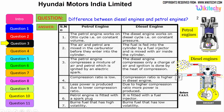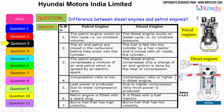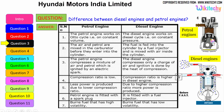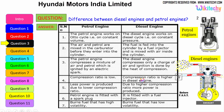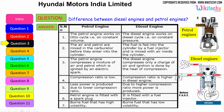The petrol engine compresses a mixture of air and petrol, which is ignited by an electrical spark. The diesel engine compresses only a charge of air, and ignition is done by the heat of compression. The compression ratio in a petrol engine is low, producing less power, whereas the diesel engine has a higher compression ratio and produces more power.